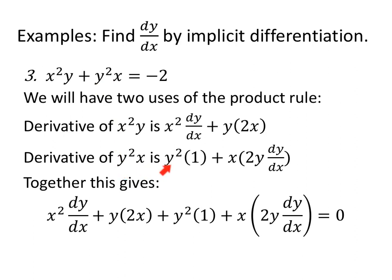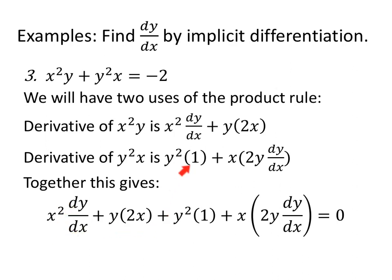Plus the product rule again for y squared x: y squared times the derivative of x, which is 1, plus x times the derivative of y squared. The derivative of y squared is 2y, and because y is a function of x, we multiply by dy/dx. Putting this together: x squared dy/dx plus y times 2x, plus y squared times 1, plus x times 2y dy/dx equals 0, since the derivative of the constant negative 2 is 0.